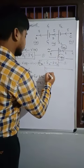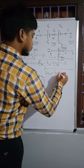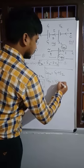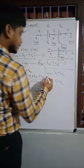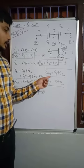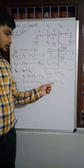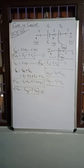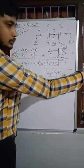Comparing, we get E equivalent equals E1 plus E2, and R equivalent equals R1 plus R2. This is the case of the series combination of cells. If two cells are joined in series, the equivalent EMF is E1 plus E2 and the equivalent internal resistance is R1 plus R2. Similarly, if N cells are joined in series, the equivalent EMF will be E1 plus E2 plus E3, up to EN.